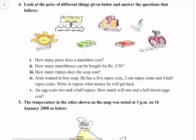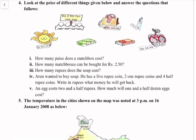Question number 4: Look at the prices of the different things given below and answer the questions. How many paise does a matchbox cost? From the price list, a matchbox costs 50 paise. How many matchboxes can be bought for Rs 2.50 or 250 paise? In 50 paise we get 1 matchbox, 100 paise gives 2, 150 paise gives 3, 200 paise gives 4, and 250 paise gives 5. So we get 5 matchboxes for Rs 2.50.